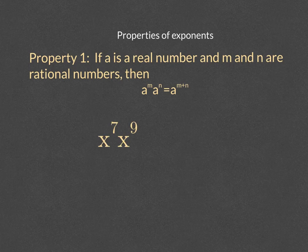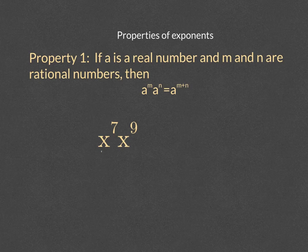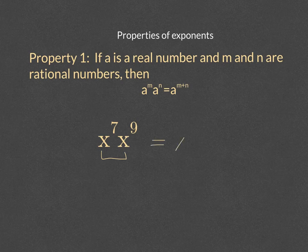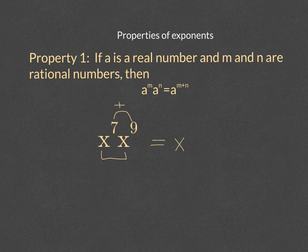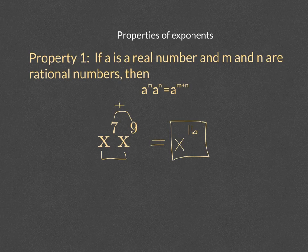Now let's take a look at an example. Let's simplify x to the seventh times x to the ninth. Now, because the bases are the same, that's the first thing you need to check. And each of these bases have a power. We can rewrite this with one base, and then we add the powers. So seven plus nine would be 16. And that is our final simplification of this term.